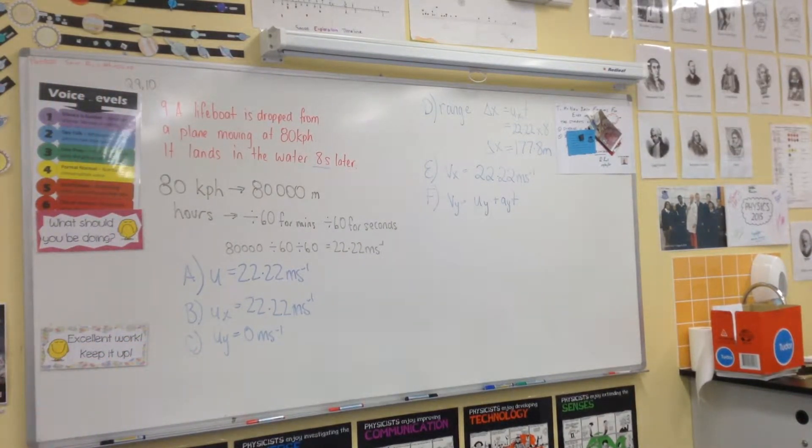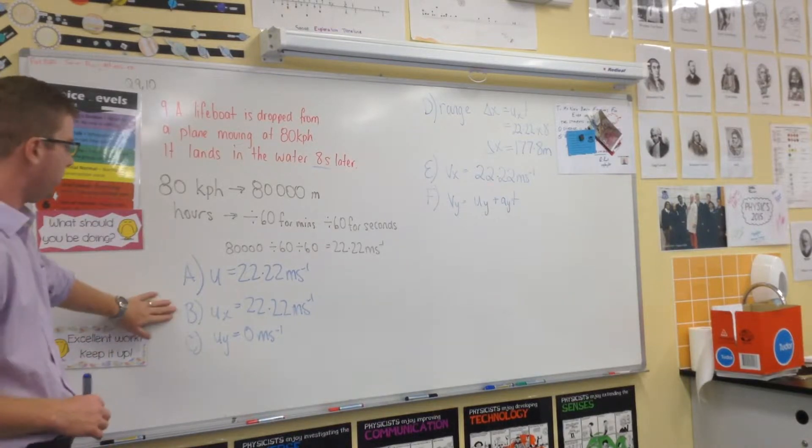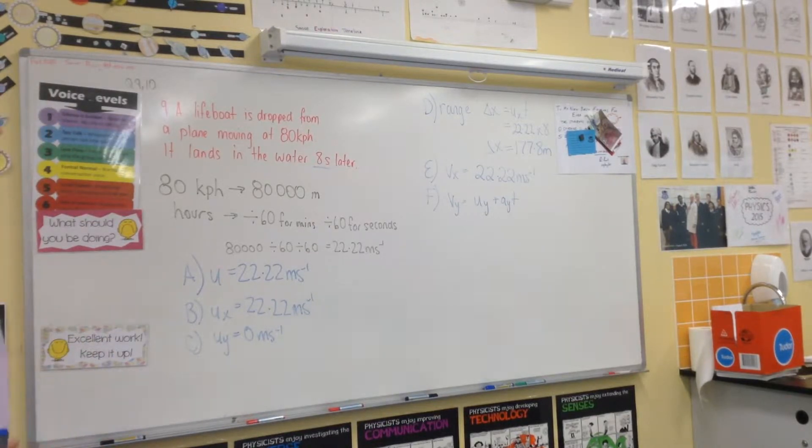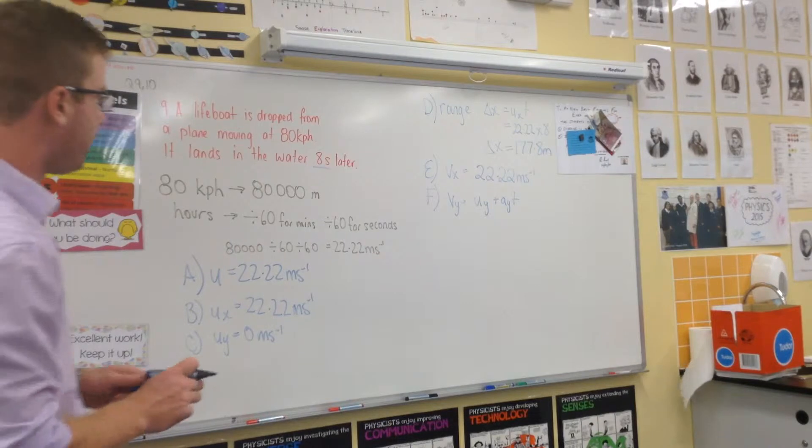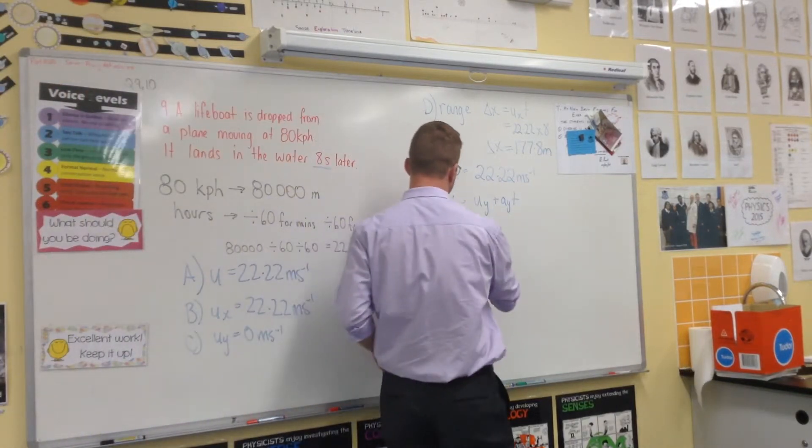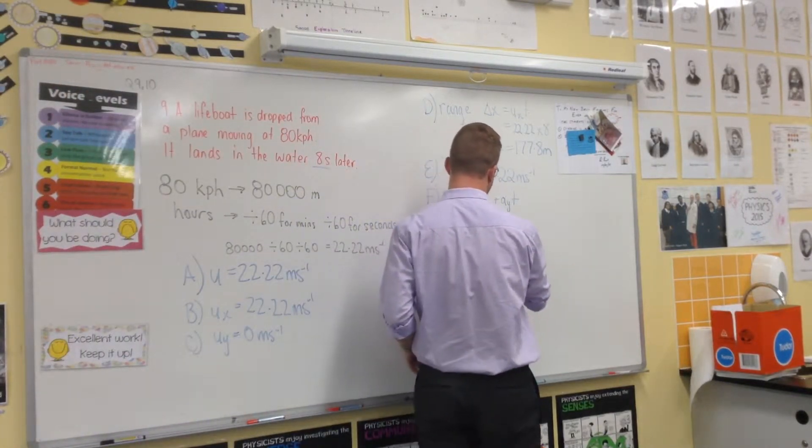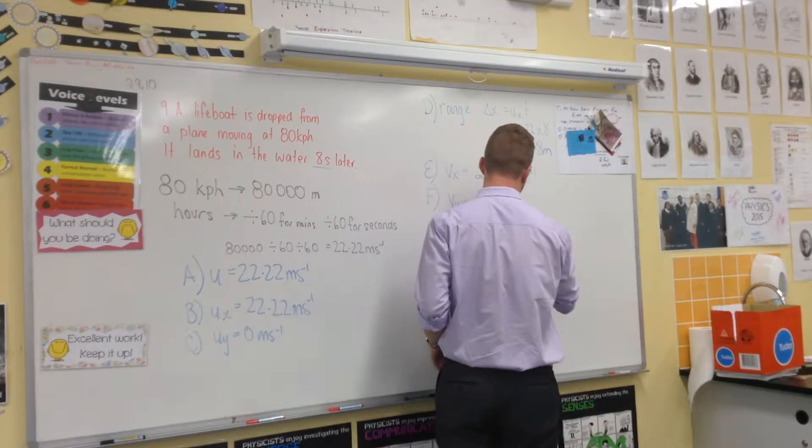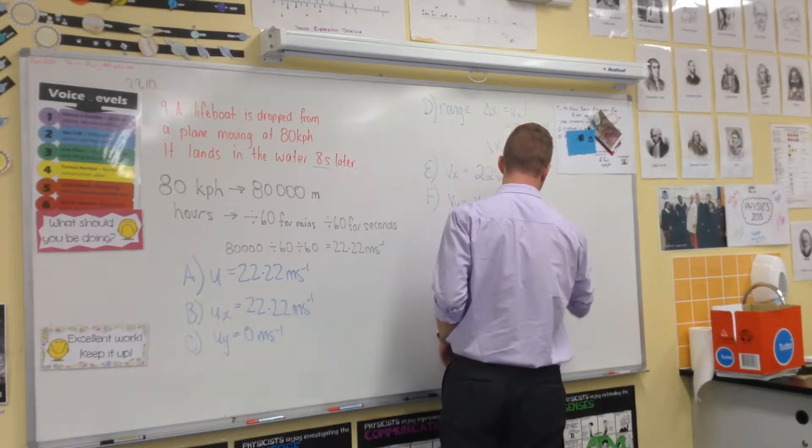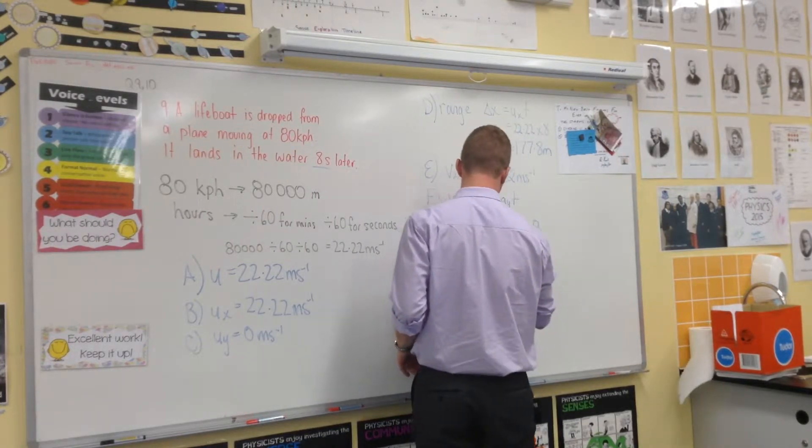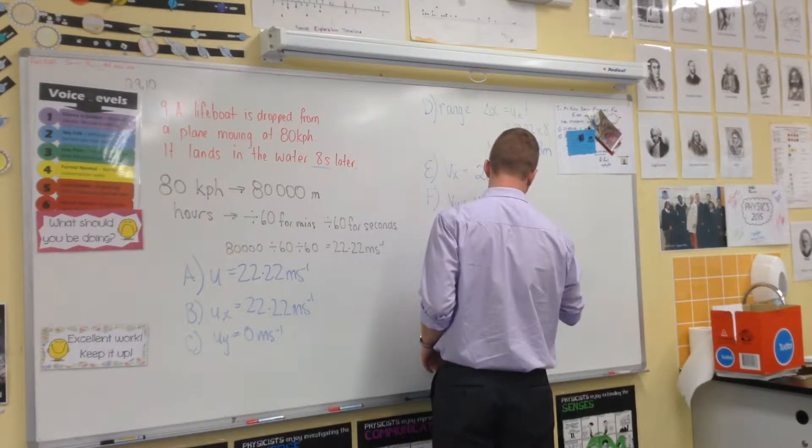E is VX, which is the same as UX, is 22.22 meters per second. F, we're going to work out: VY equals 0 plus 9.8 times 8 seconds, given to you in the question, and that is 78.4 meters.